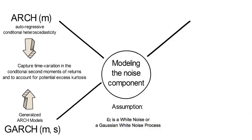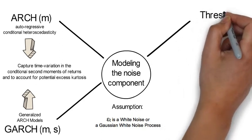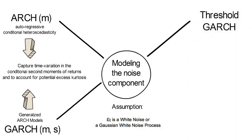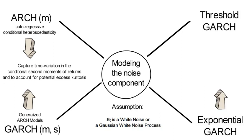Because these approaches do not capture asymmetries in returns, such as skewness, we also introduce the threshold GARCH and the exponential GARCH models, which are further generalizations to also allow for negative and positive return skewness.